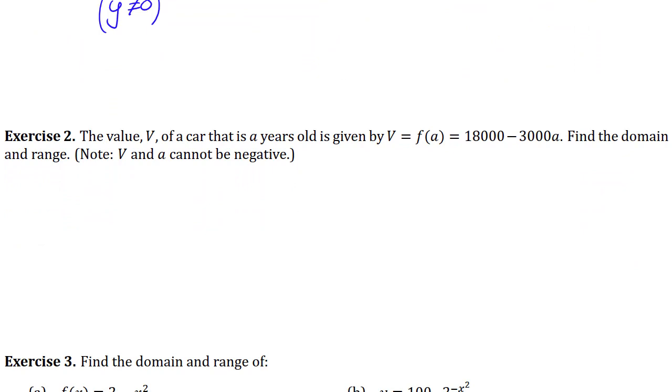We're given that the value V of a car that is a years old is given by this formula here. Let's find the domain and range of this. So the trick is that V and a cannot be negative. V can't be negative because if V is negative that means that you have a car that's worth like negative dollars that doesn't really make sense.